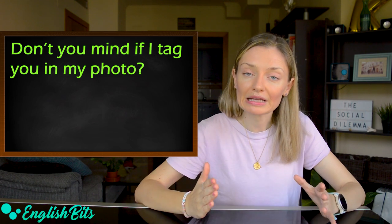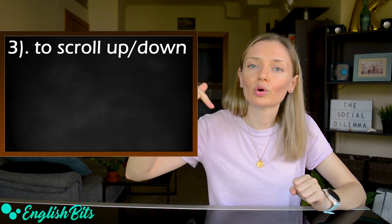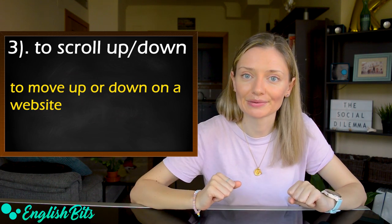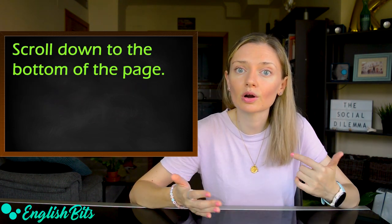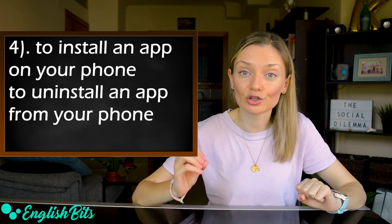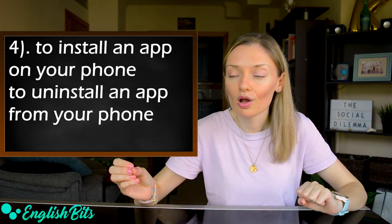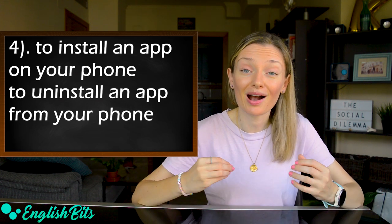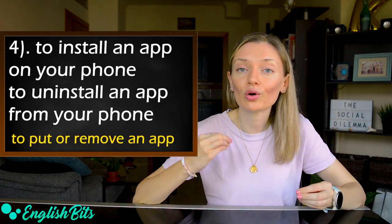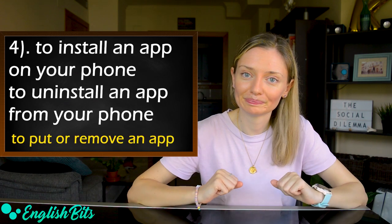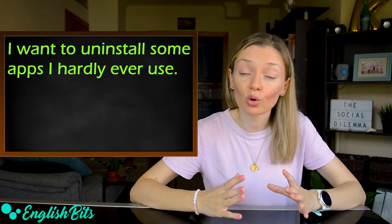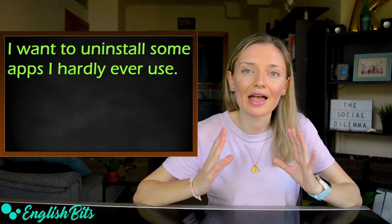Number three: to scroll up or down. It means to move up or down on a website. For example, scroll down to the bottom of the page. Number four: to install an app on your phone, or the opposite, to uninstall an app from your phone. It means to put or remove an app. For example, I want to uninstall some apps I hardly ever use.